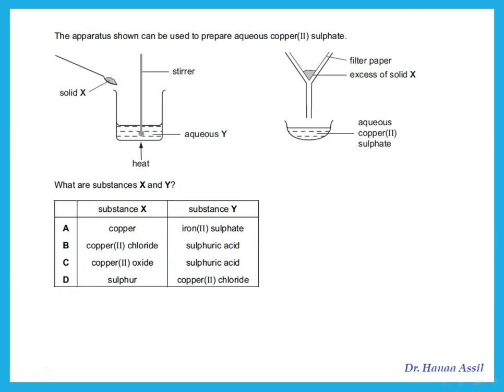The apparatus shown can be used to prepare aqueous copper sulfate. To make copper sulfate, we add a base to sulfuric acid. The base needed is copper oxide, so the answer is C.